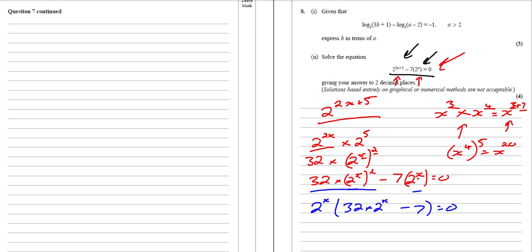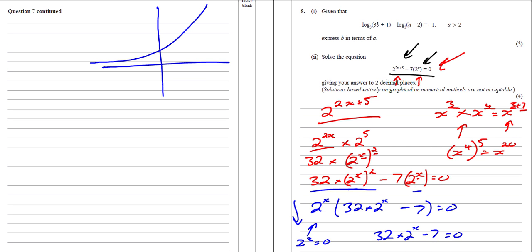So then we need to solve it. We can either solve 2^x = 0 or 32 times 2^x − 7 = 0. Now one of the laws for 2^x is that it can never equal 0 — the graph of anything to the power of x goes through at 1 and the x-axis is an asymptote, so it never actually hits the x-axis. Therefore there are no solutions for 2^x = 0.